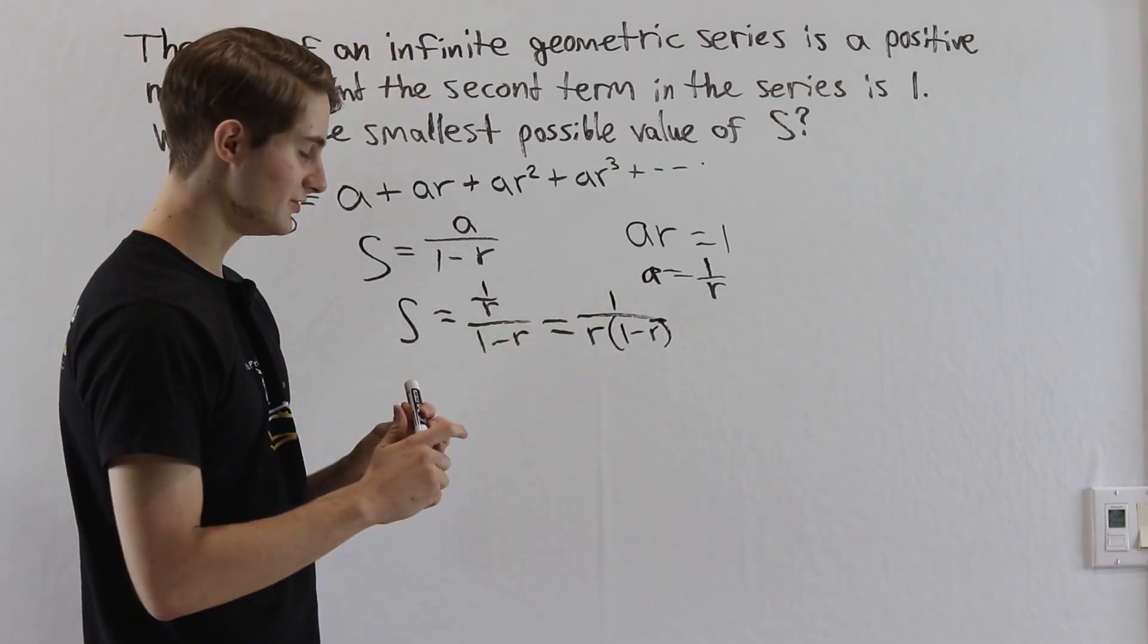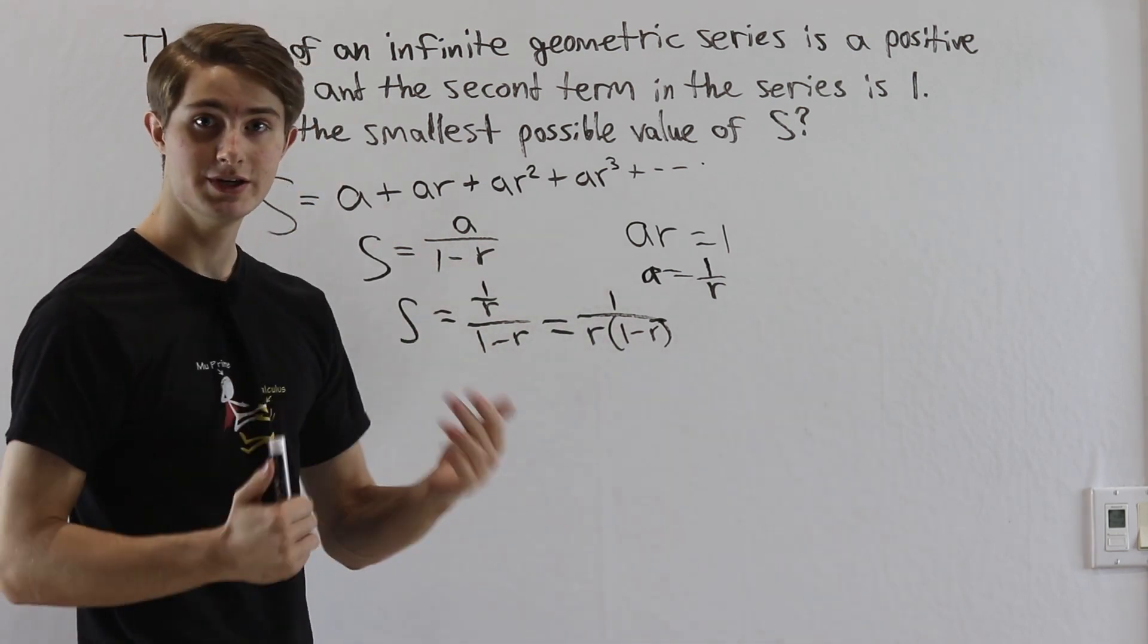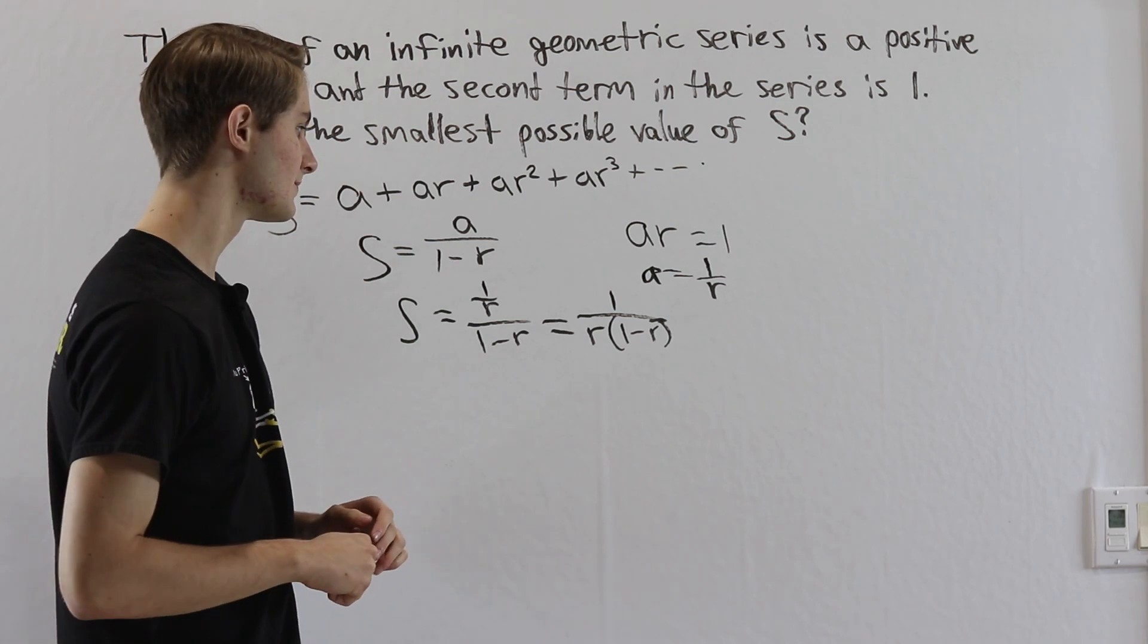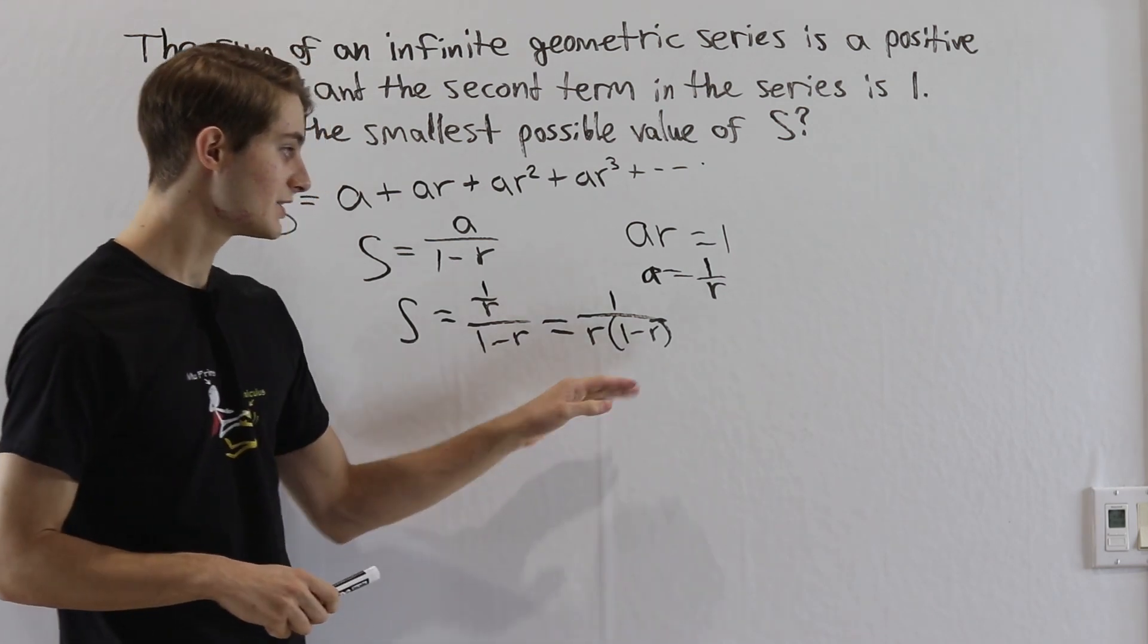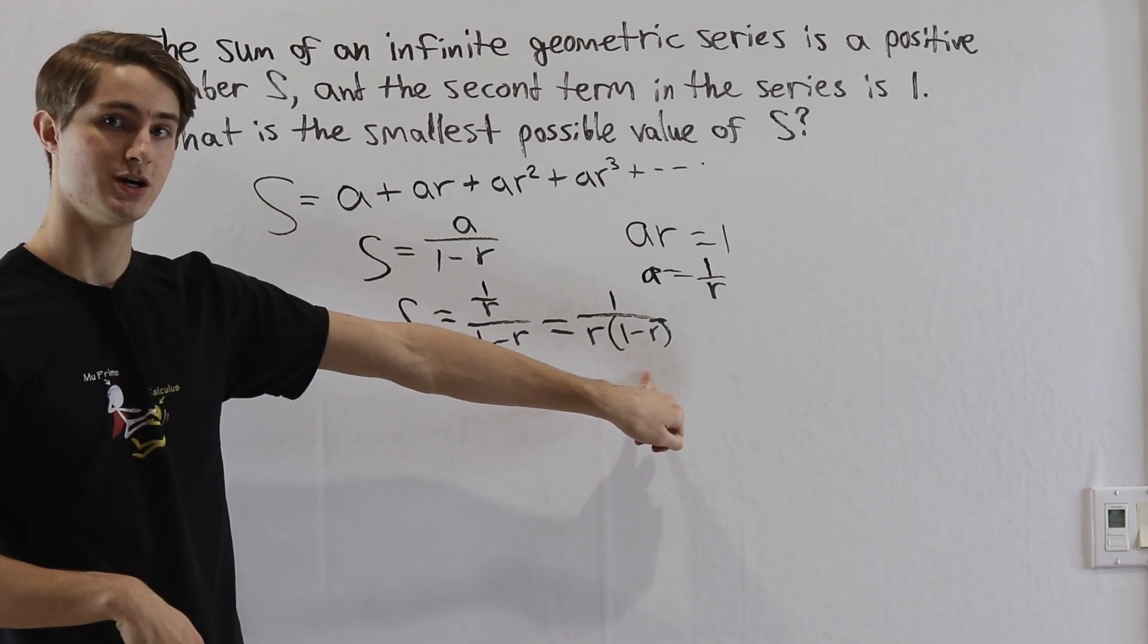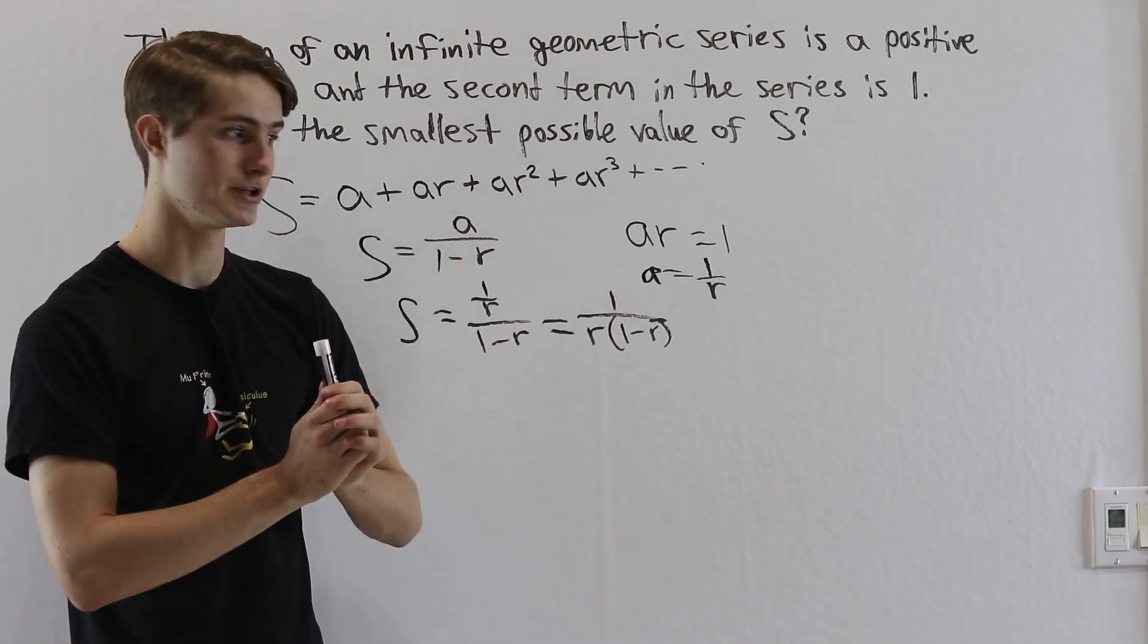And this is actually a lot easier to work with, because we see on the bottom this is a quadratic, and it's pretty easy to figure out how to maximize or minimize quadratics. Now in this case, because the quadratic is in the denominator, our goal is to make it as big as possible, because if a big number is on the bottom, then that's going to make the whole number smaller.